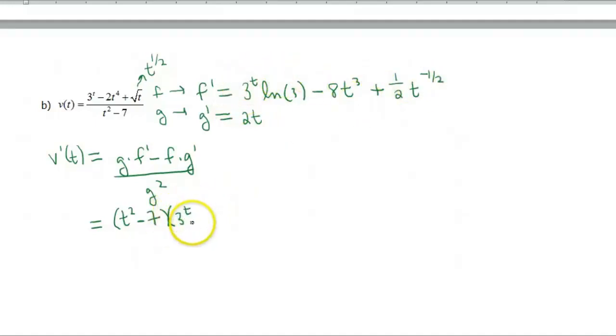So 3^t, ln of 3, minus 8t^3, plus 1/2 t^(-1/2), minus. Okay, f, so that was my original function in my numerator. 3^t, minus 2t^4, plus the square root of t. And then times the derivative of my denominator, which was 2t.